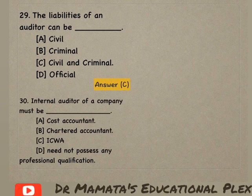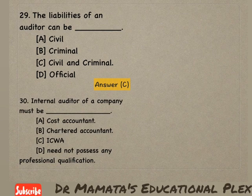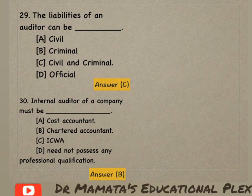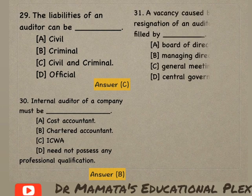Next: Internal auditor of a company must be — cost accountant, chartered accountant, ICWA, or does not possess any professional qualification? Company ka jo internal auditor hota hai woh kaun hona chahiye? Humari company ka jo internal auditor hai woh chartered accountant hona chahiye — he must be a qualified professional. So option B is the correct answer.